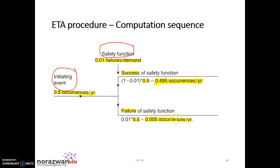This is the failure frequency for this safety function. If you add the success frequency and the failure frequency together, it will equal back to your initiating event occurrence frequency. This is the example of how you have your ETA procedure and your computational sequence.